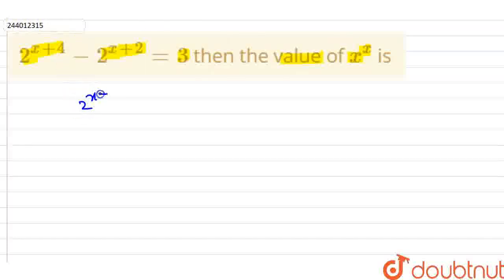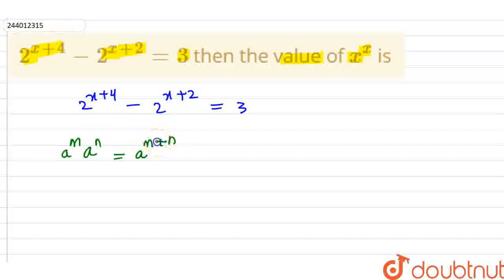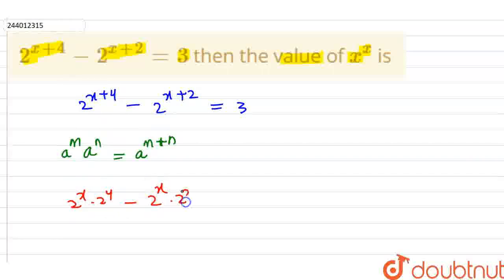Look, the equation given is: 2 to the power x plus 4, minus 2 to the power x plus 2, is equal to 3. Now, we know the exponent law: a to the power m, into a to the power n, equals a to the power m plus n. So here we break it up and write: 2 to the power x into 2 to the power 4, minus 2 to the power x into 2 to the power 2, equals 3.